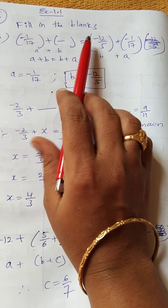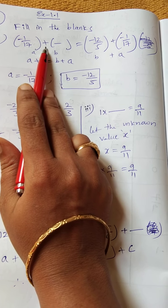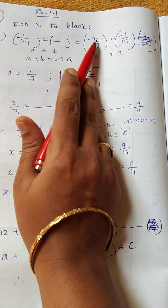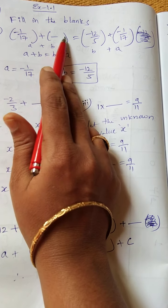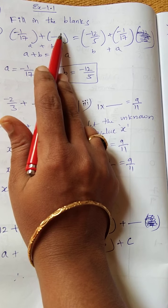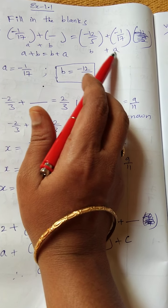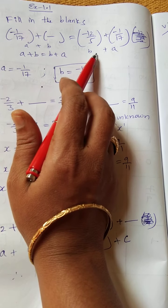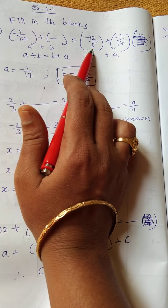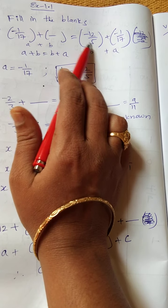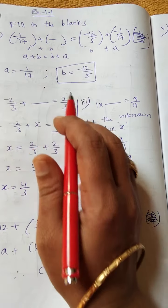Question 3 says fill in the blanks. First part: -1/17 + blank = -12/5 + (-1/17). We need to fill this blank and find the unknown value. It's in the form A + B = B + A, the commutative property. Here A is -1/17, and B is -12/5, but B is not given in the first blank. So the blank value is -12/5. Very simple.